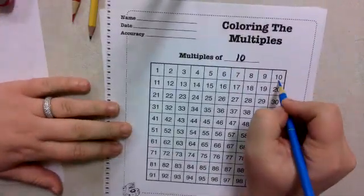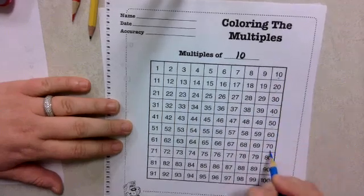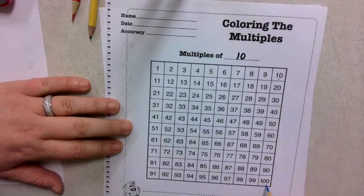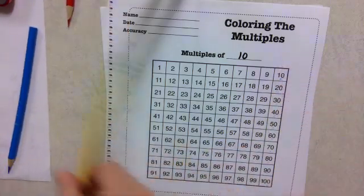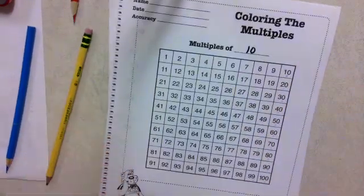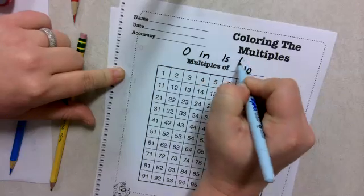So as we count by 10s, it's 10, 20, 30, 40, 50, 60, 70, 80, 90, 100. What do you notice about all of the multiples of 10? What do you notice about the ones place? They all have a 0 in the ones place.